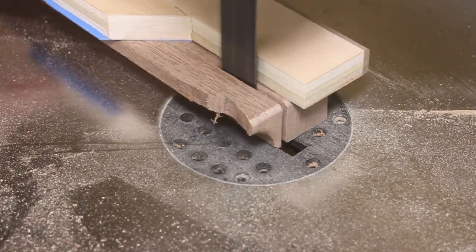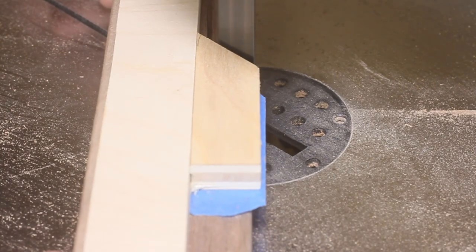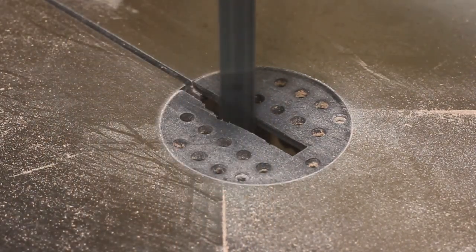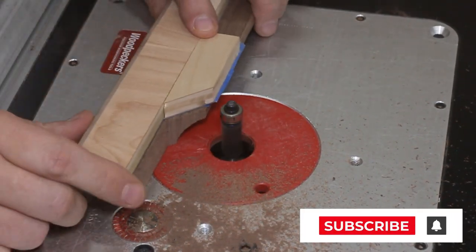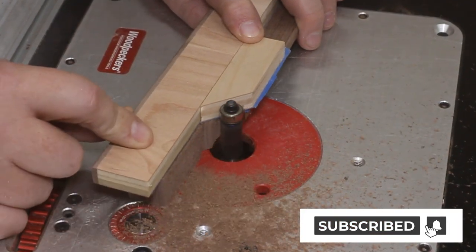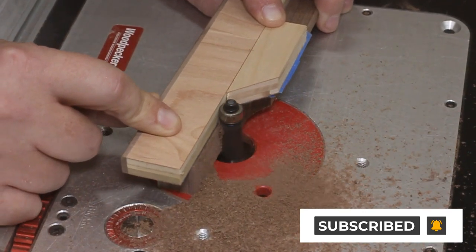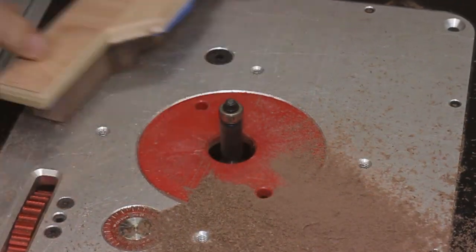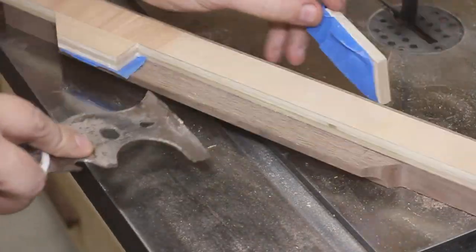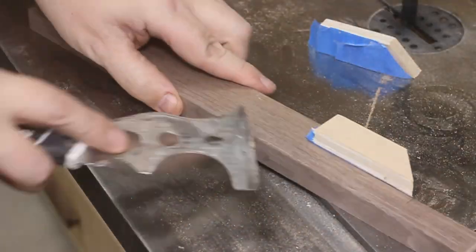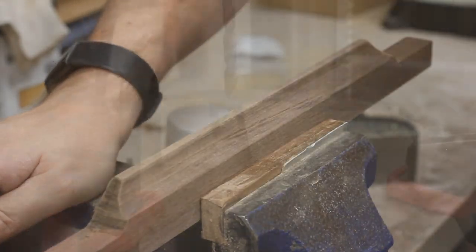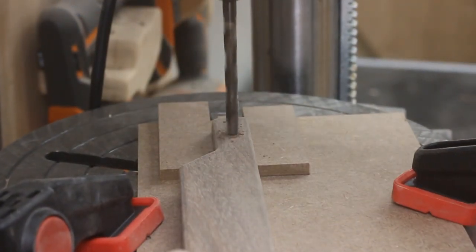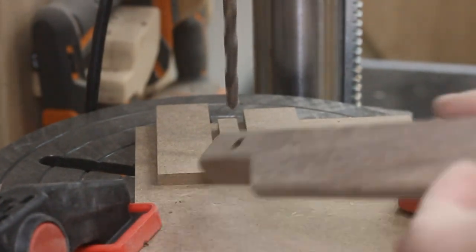I glued on a temporary fence using some scraps, and then cut out the majority on the bandsaw. And then the rest was trimmed flush over at the router table. So here's the shape that I ended up with. It looks kind of cool. A little bit of sanding to soften all the edges, and then I made a jig for the drill press where I could poke some mounting holes into each one at exactly the same spot.